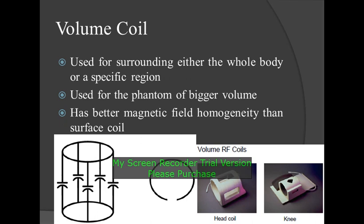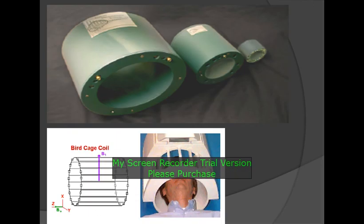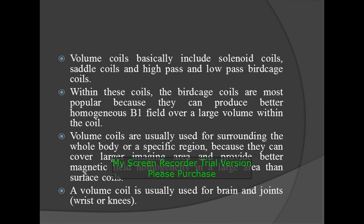Volume coils are used for surrounding either the whole body or a specific region. They are used for phantoms of bigger volume and have better magnetic field homogeneity than surface coils. Volume coils basically include solenoid coils, saddle coils, and high-pass and low-pass birdcage coils. Among these, birdcage coils are the most popular because they can produce a better homogeneous B1 field over a large volume. Volume coils are usually used for surrounding the whole body or a specific region, covering a larger imaging area and providing better magnetic field homogeneity than surface coils. A volume coil is typically used for brain, joints, and also wrist or knee joints.